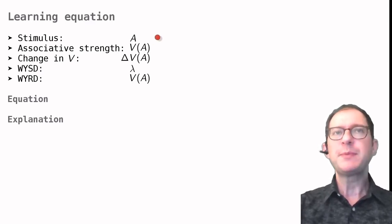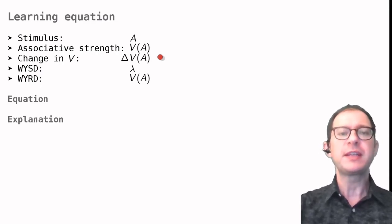We have a symbol for the stimulus that is being experienced, which is simply A. A symbol for the associative strength of the stimulus, VA. A symbol for how much the associative strength changes with the learning experience, which is delta VA.